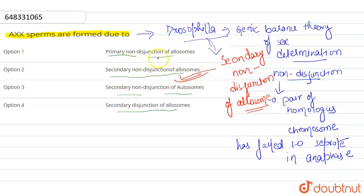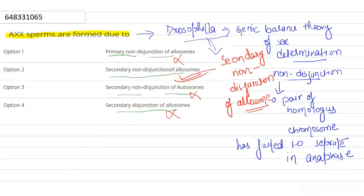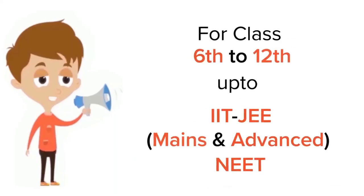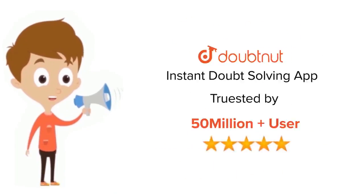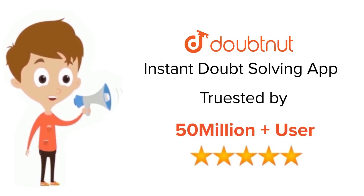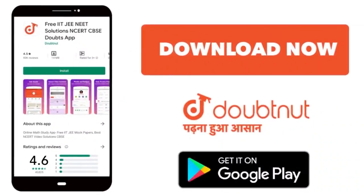Primary non-disjunction of allosome is wrong. Secondary non-disjunction of autosome is wrong. Secondary disjunction of allosome is also wrong. So we got our answer. I hope it's clear. Thank you. For class 6 to 12, IIT JEE and NEET level, trusted by more than 5 crore students — download the DoubtNet app today.